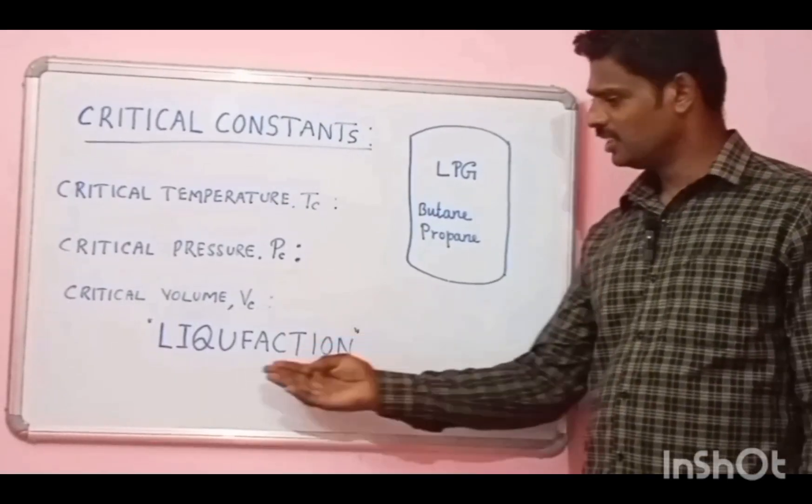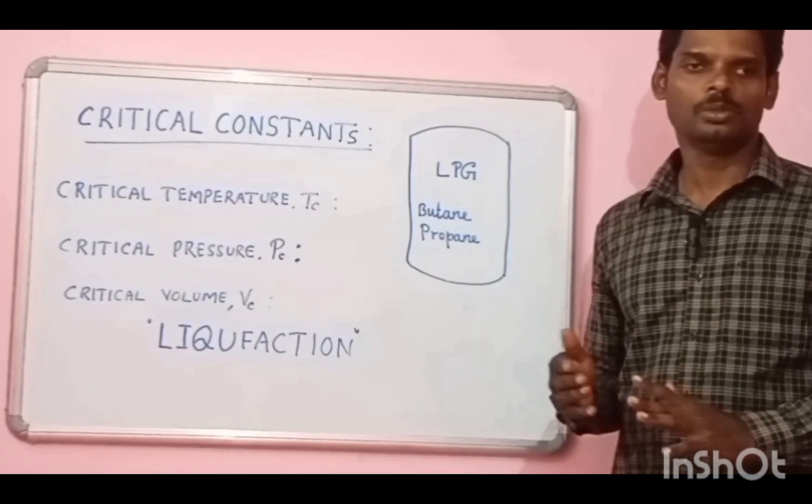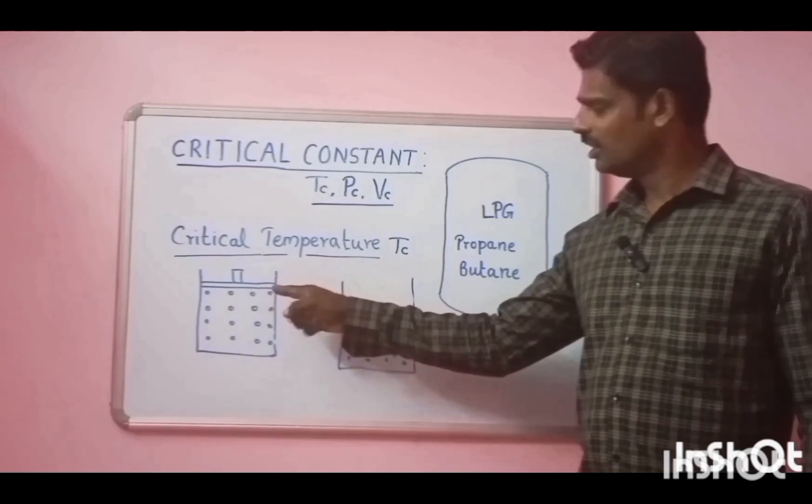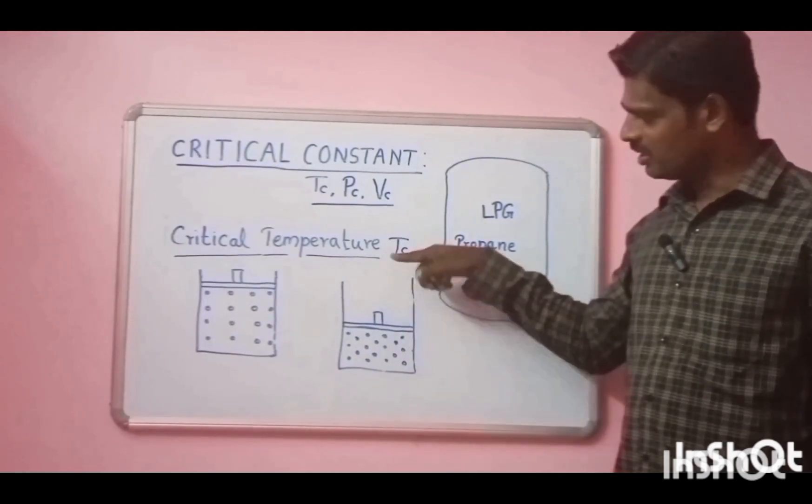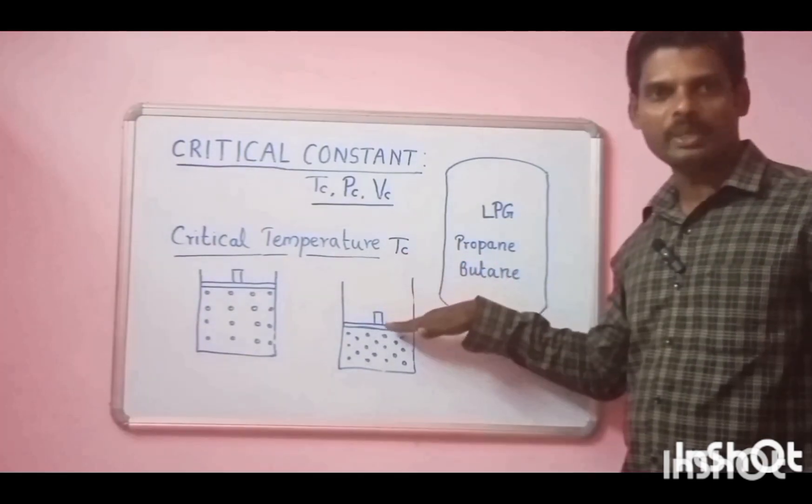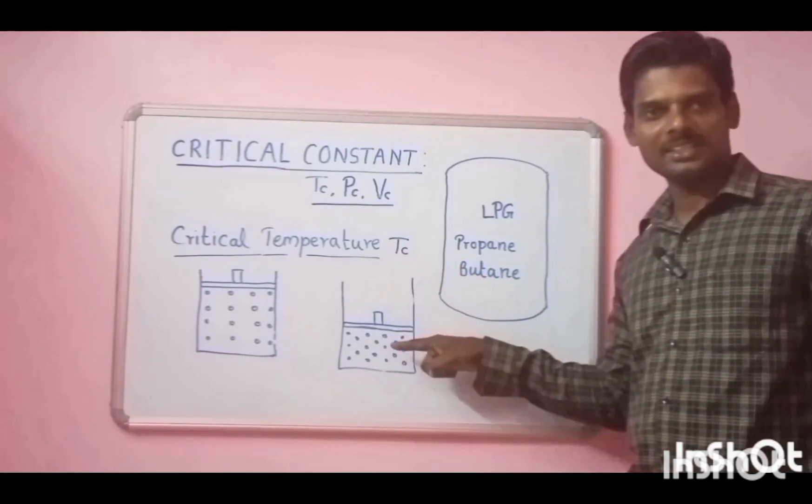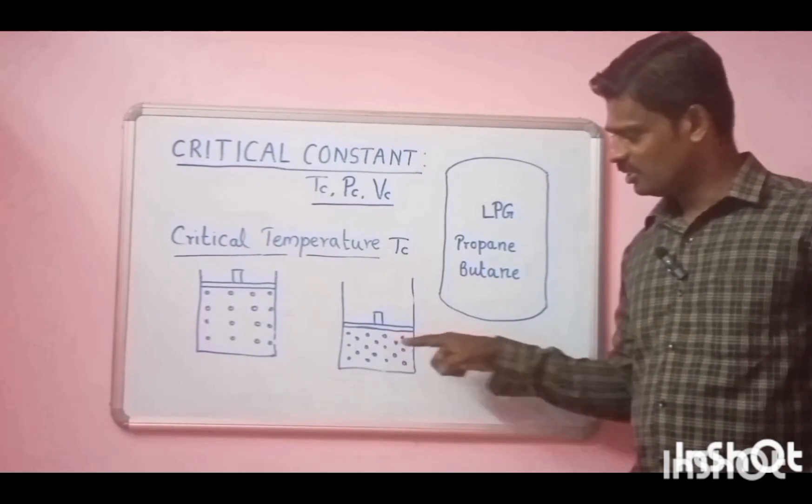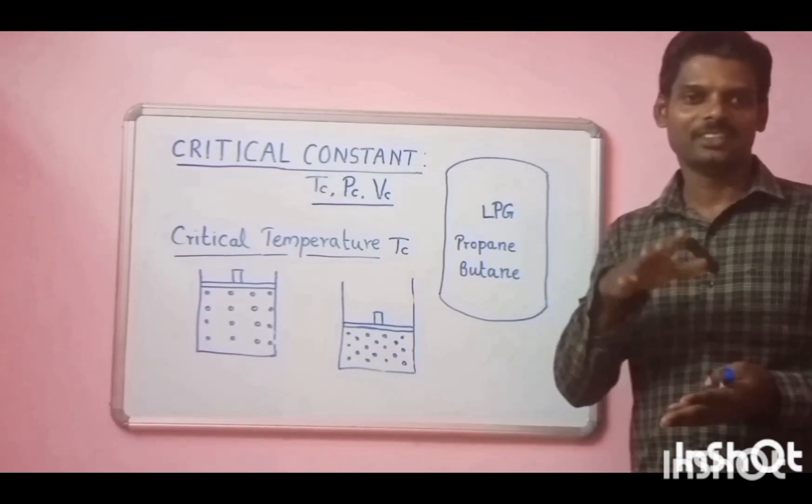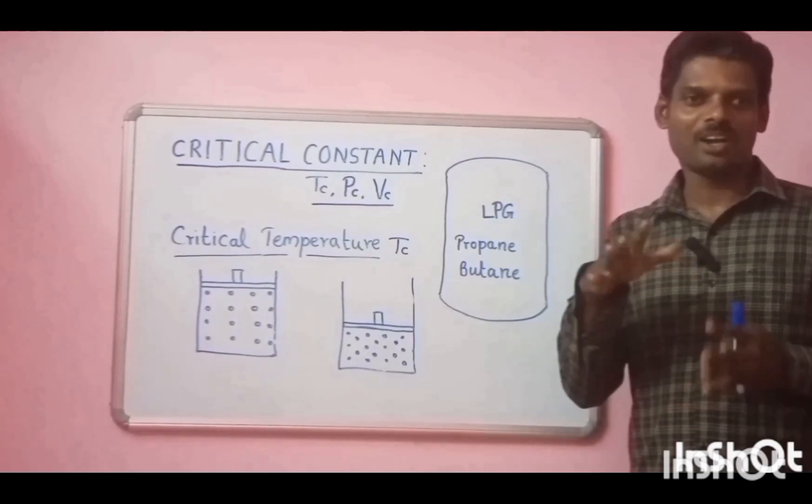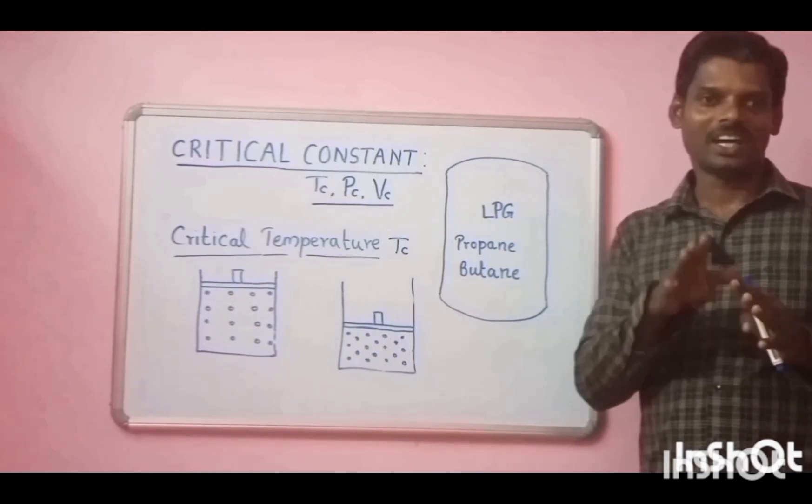That is why we need the process of liquefaction. In liquefaction, the gas will be converted into liquid phase. In a cylinder with a piston, the gas molecules are here. And in the second stage, we have the same gas but the piston is compressing it. So the pressure is being increased. See the gap between the molecules—these are very close to each other. When you are compressing the gas, when you are increasing the pressure, the gas molecules come closer and closer. They will become liquid. So the gas will become liquid at this stage.